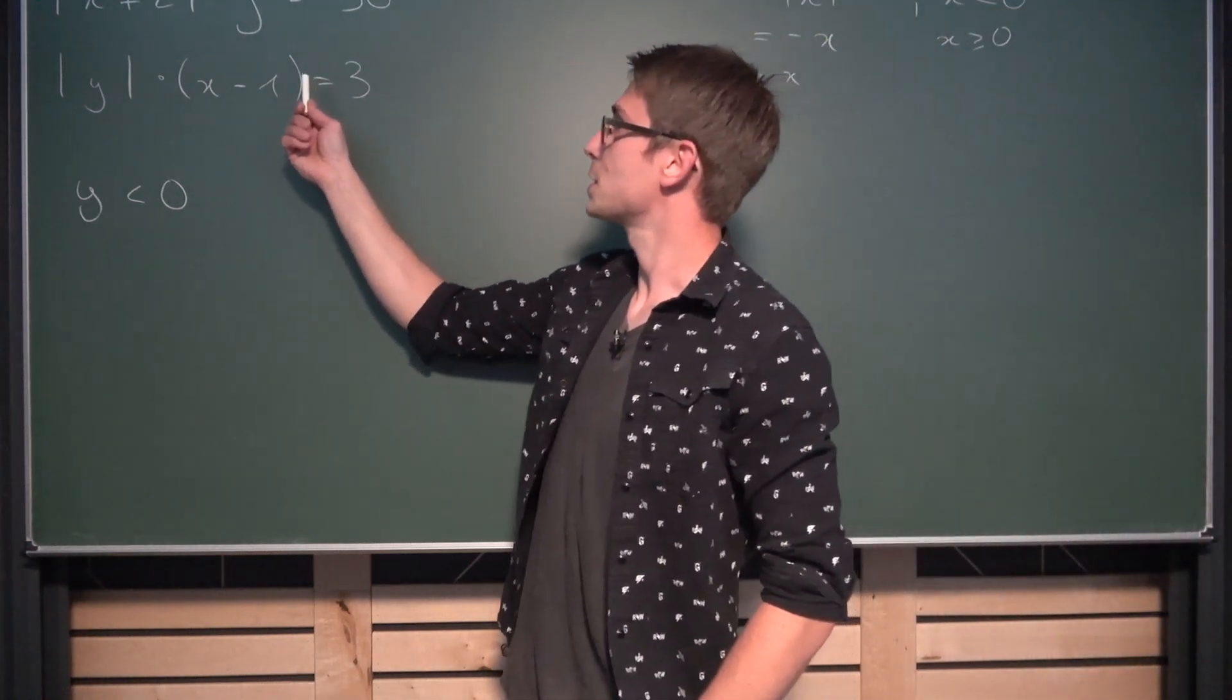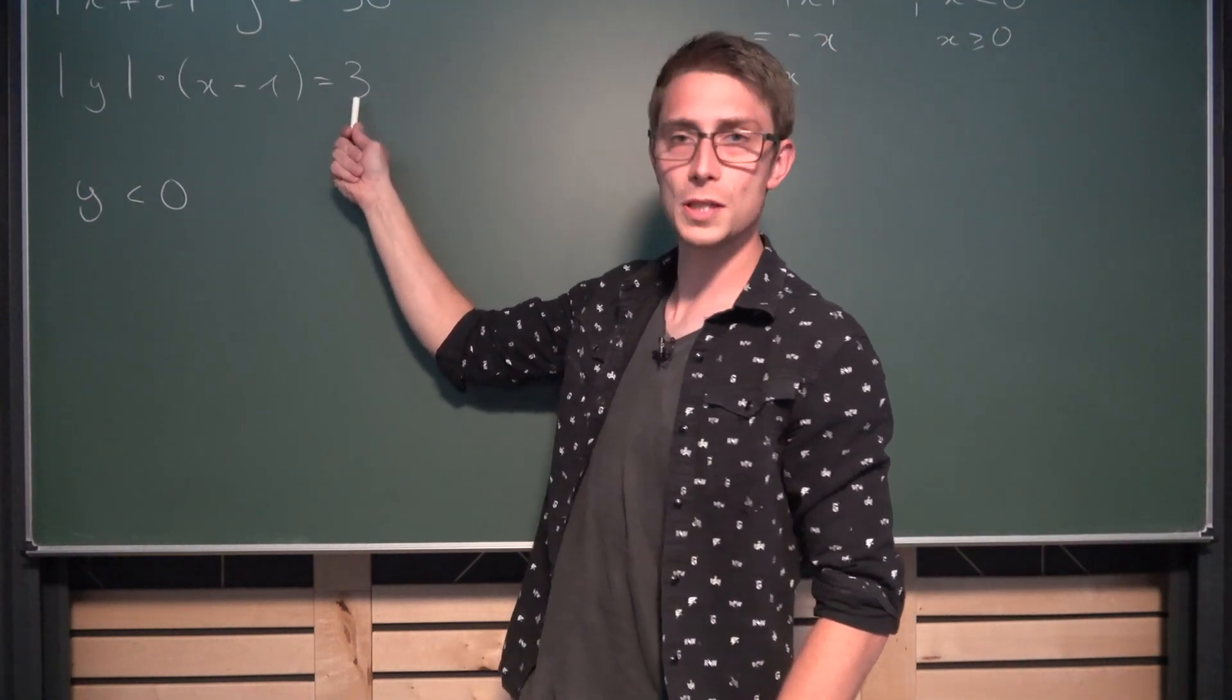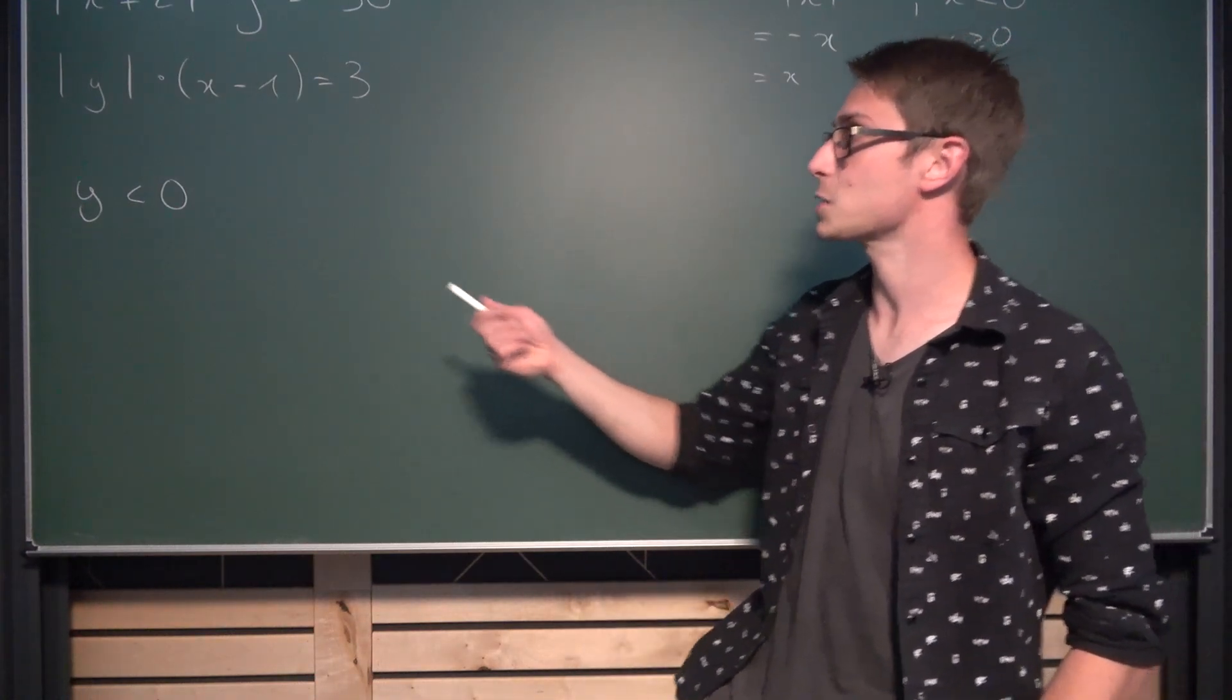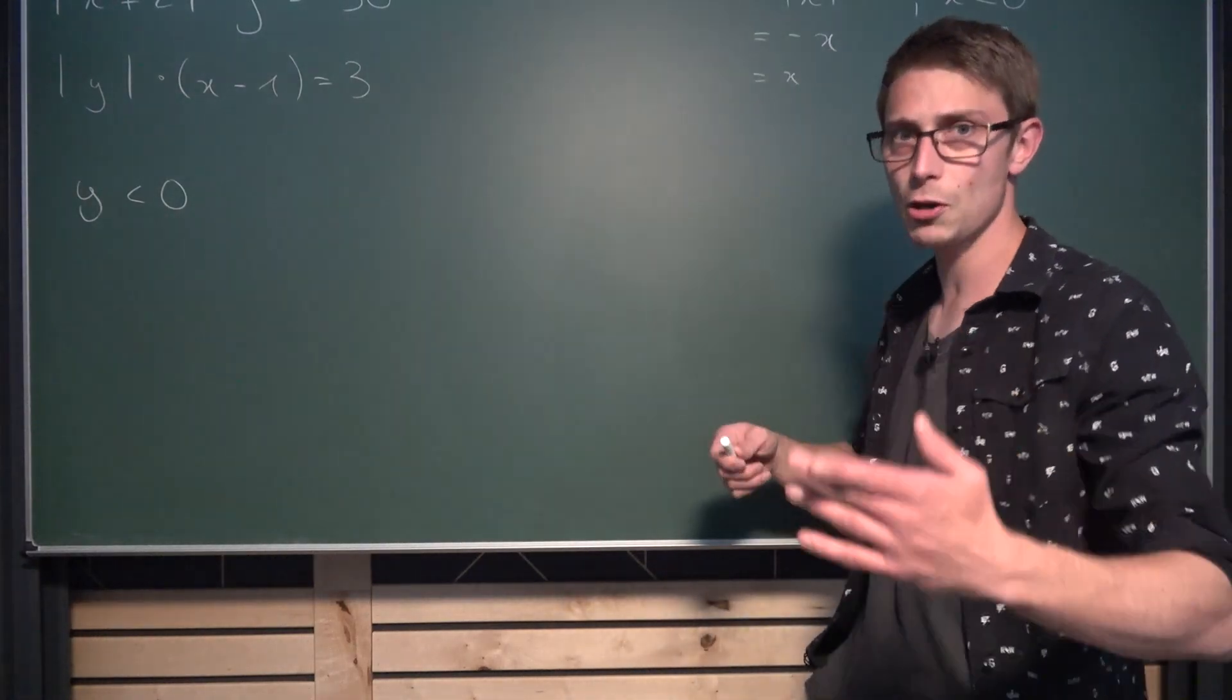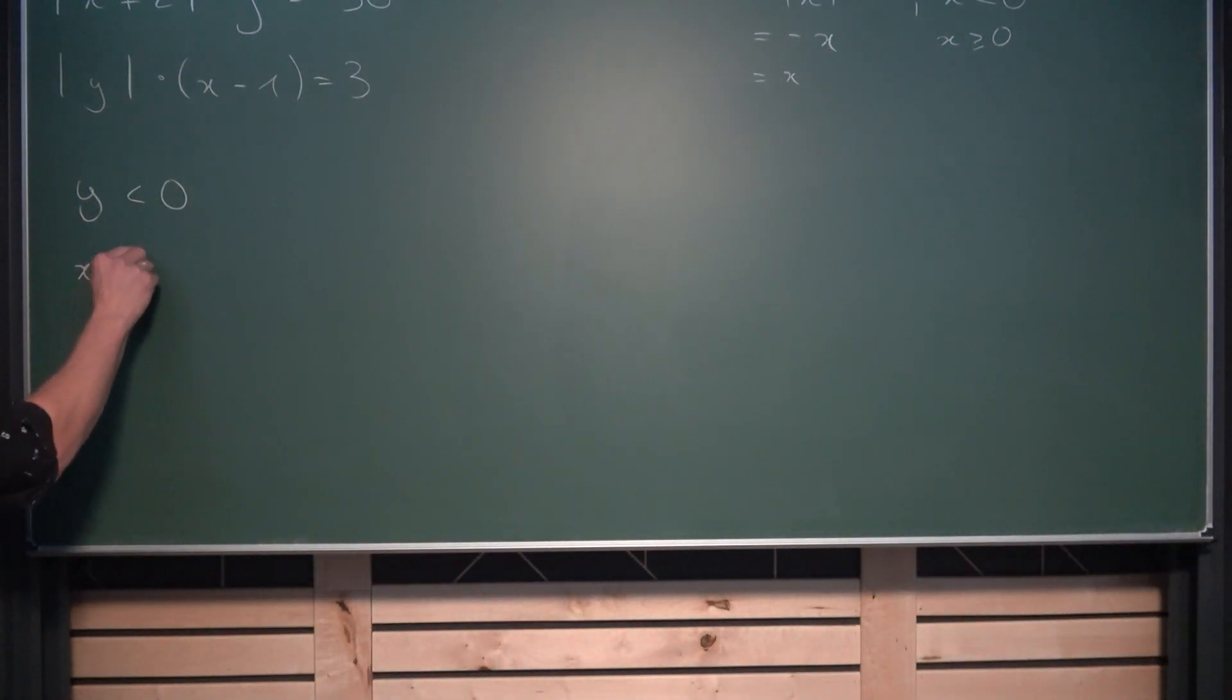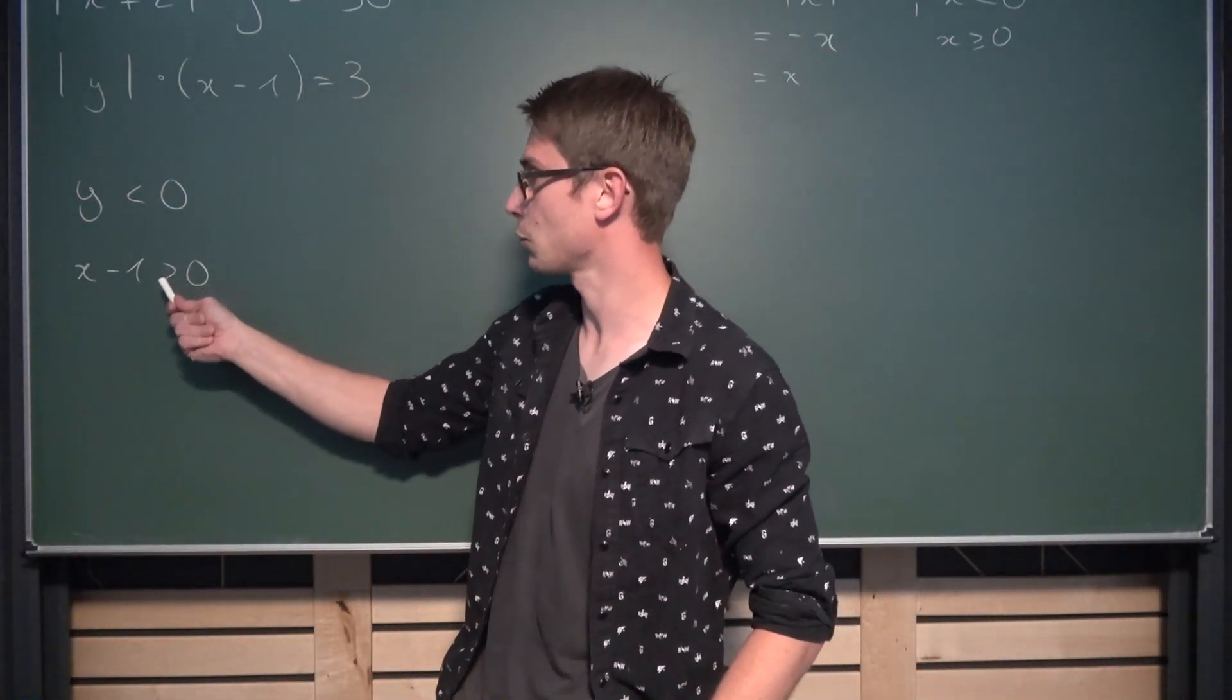Now, what about equation number 2? If we take a look at the equation number 2, we are going to notice that we have a positive number on the right hand side. How can we get a positive number? Either by multiplying two negative numbers together, which doesn't work out because we have the absolute value of y here, which is always positive. So the only option left is for both factors to be positive. Meaning x minus 1 must also be greater than 0, just like the absolute value of y.